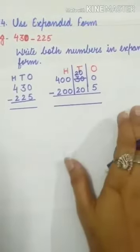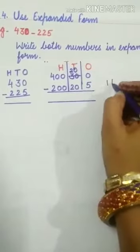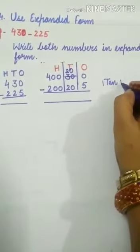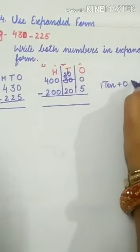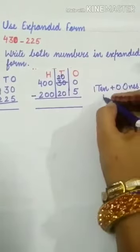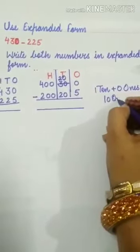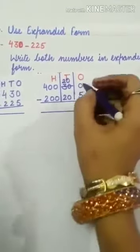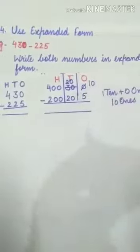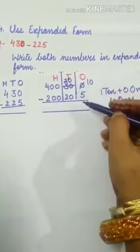And at the ones place, we now have 1 ten plus 0 ones, which means 10 ones. Cut down this 0 and write down 10 here. Now 10 minus 5 we can do. For this, just start counting after 5 until you get 10.